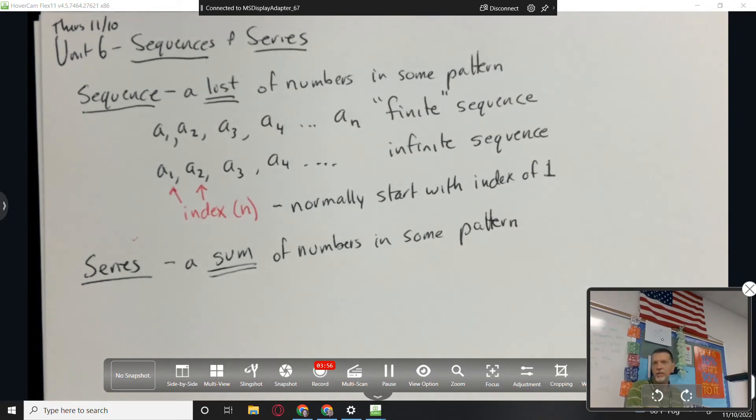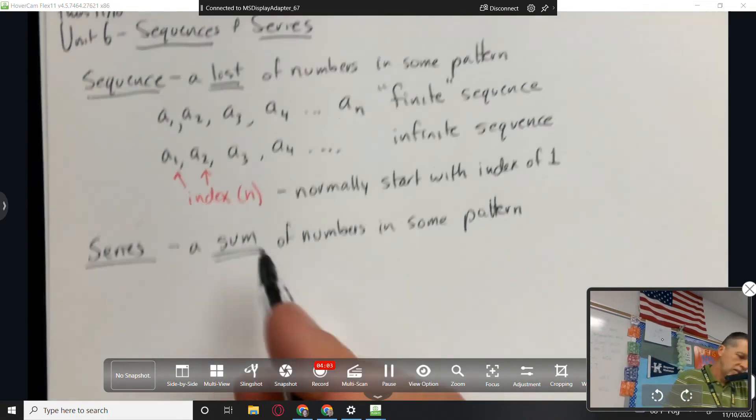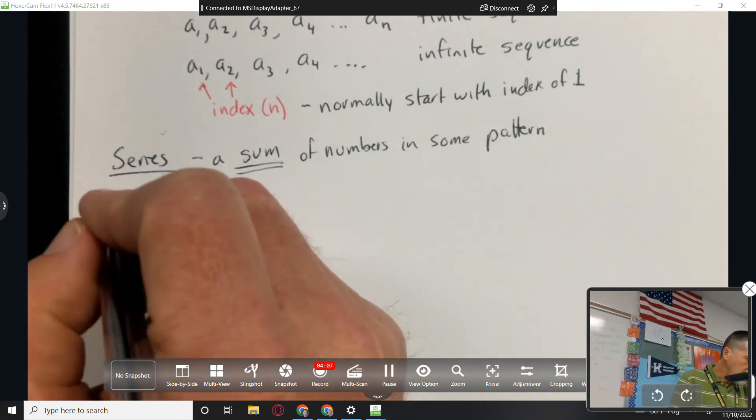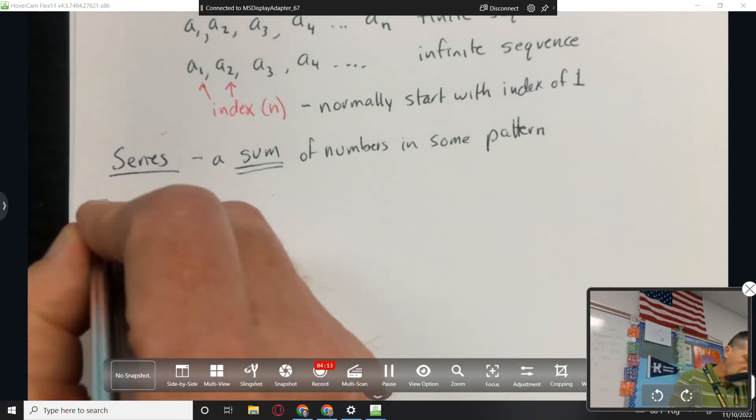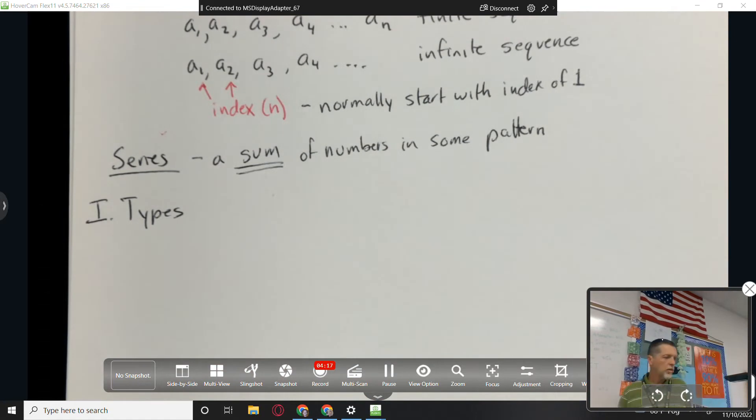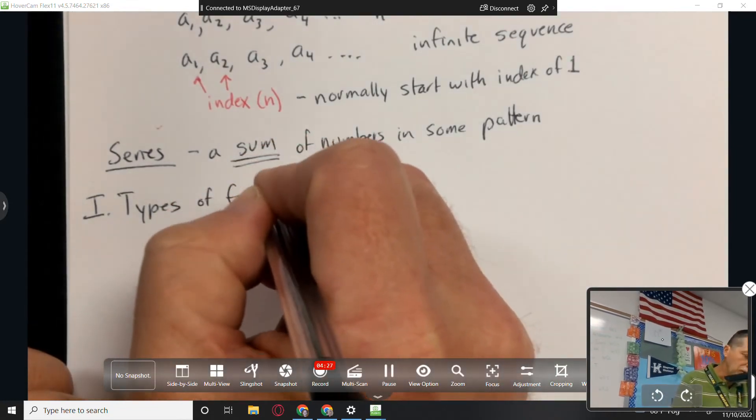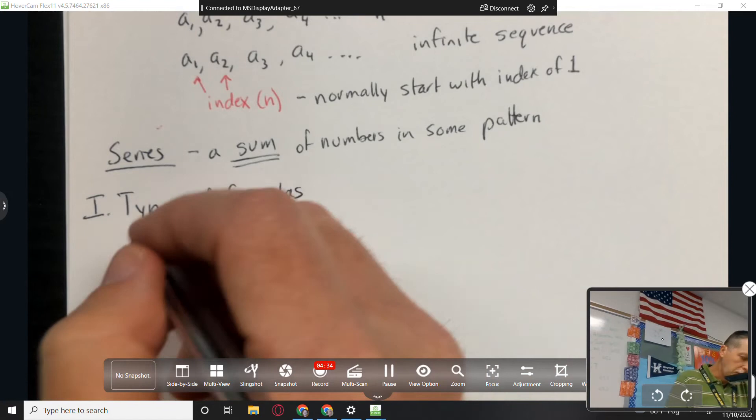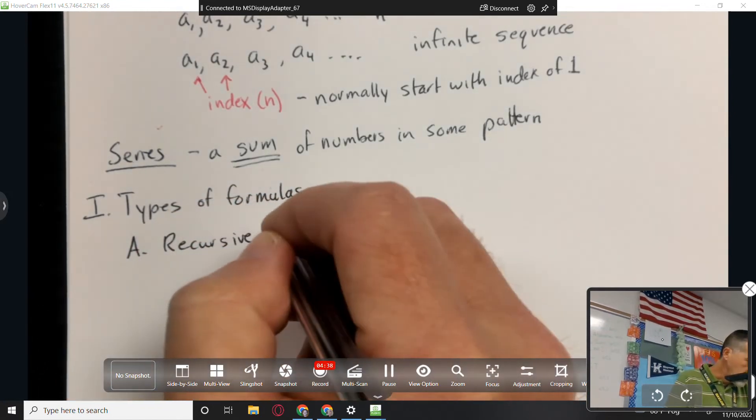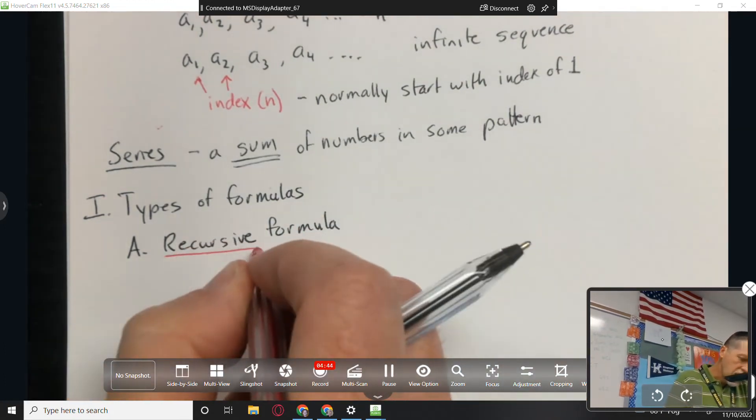Today we'll just be talking about sequences, the patterns. And, tomorrow and the next day, we'll be talking about adding them up, and the formulas that go with that. Today, there's going to be two ways to classify the types of series. There's two Roman numerals, and they're both types. I need a better word, but they're both types of formulas. The first type is a recursive formula.